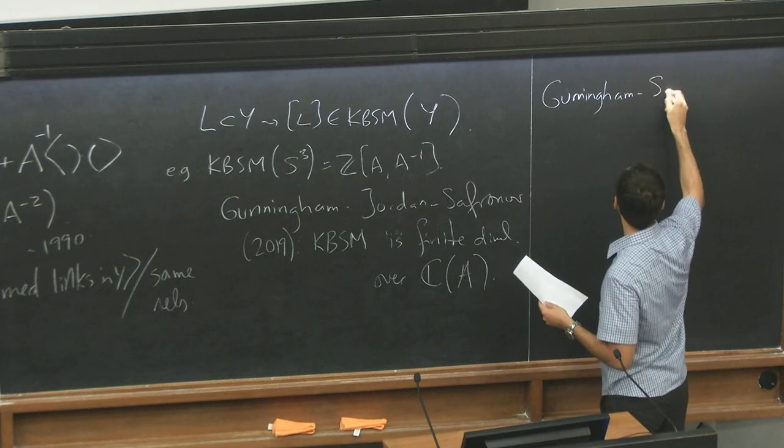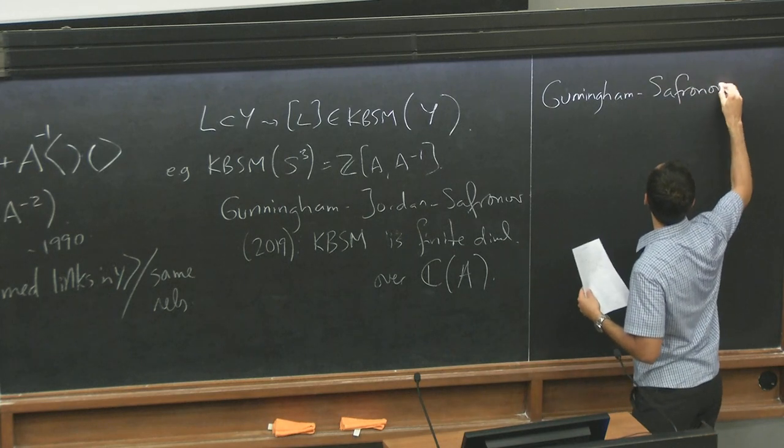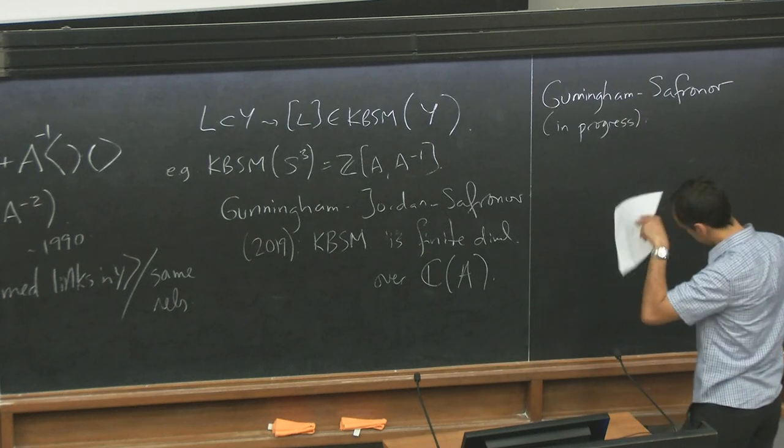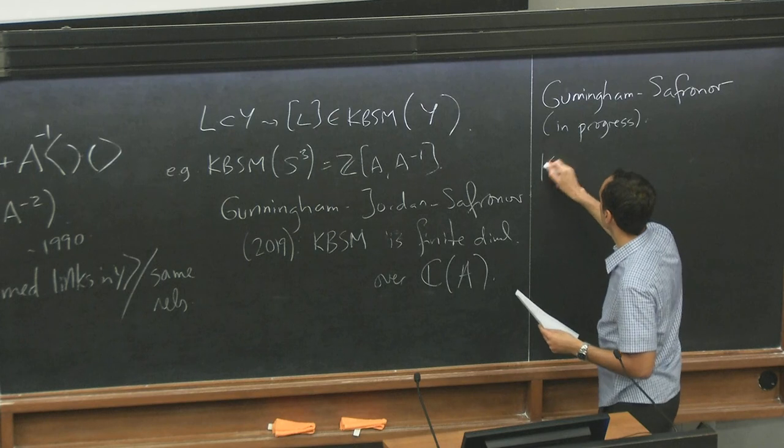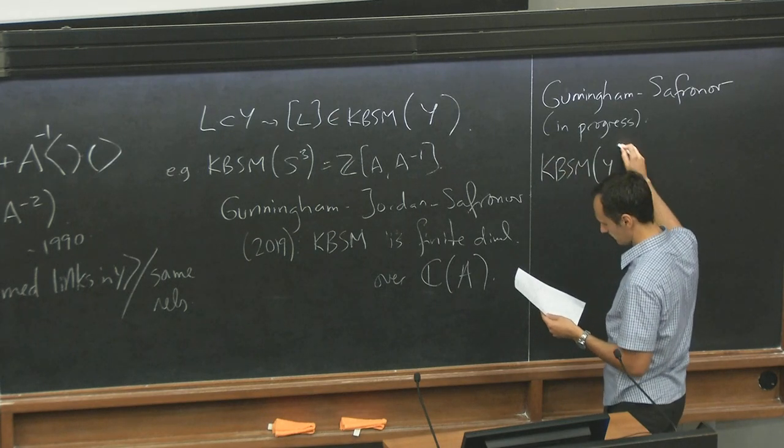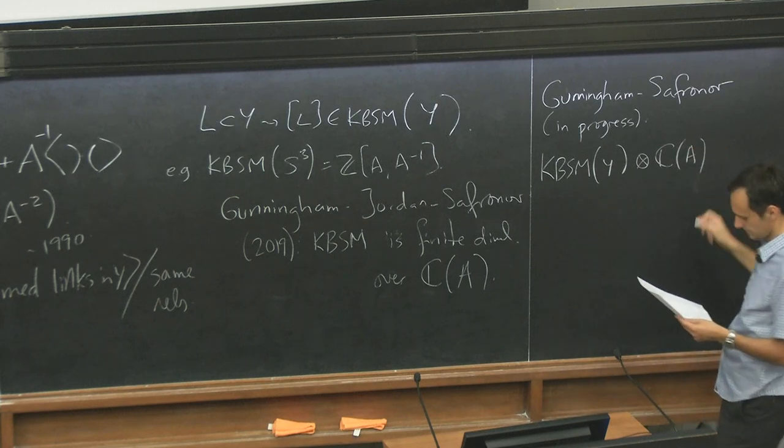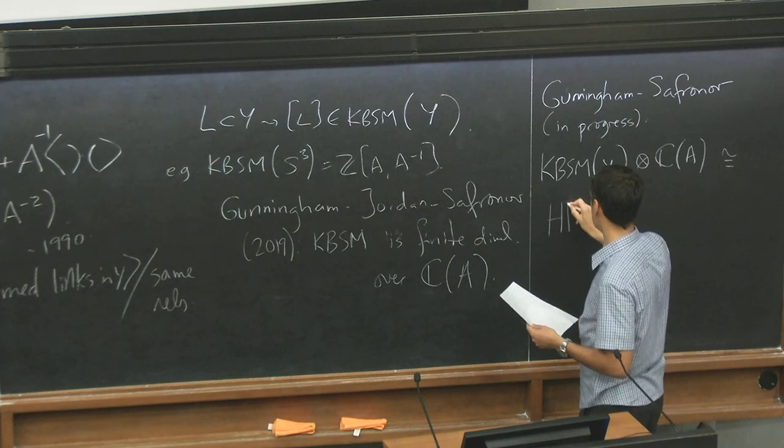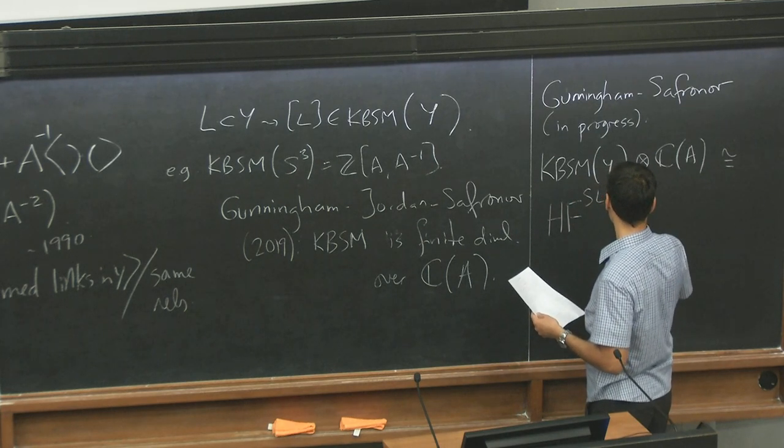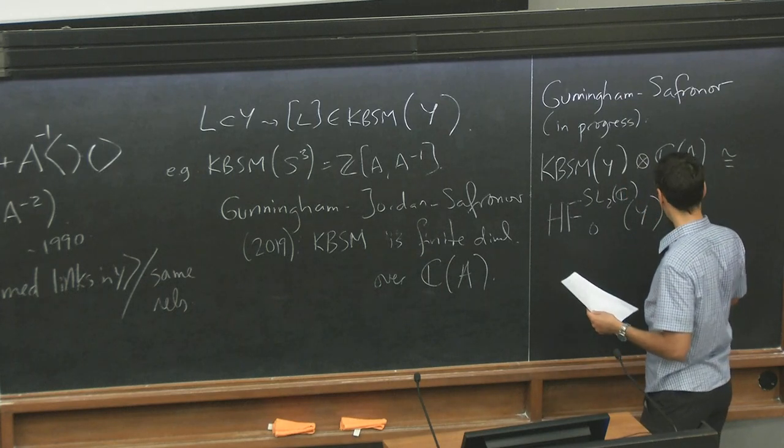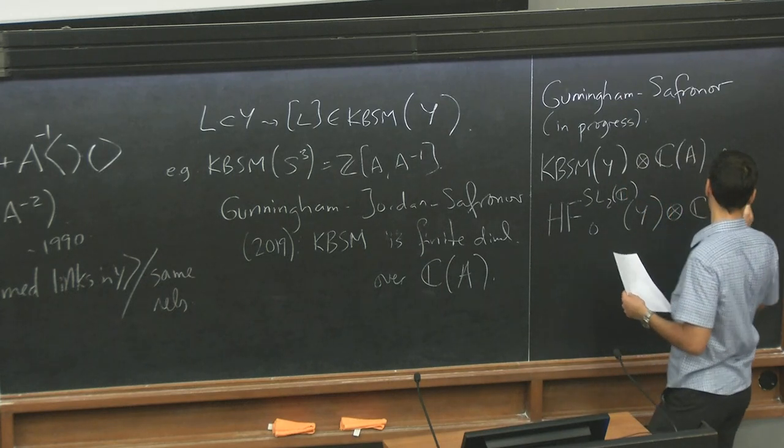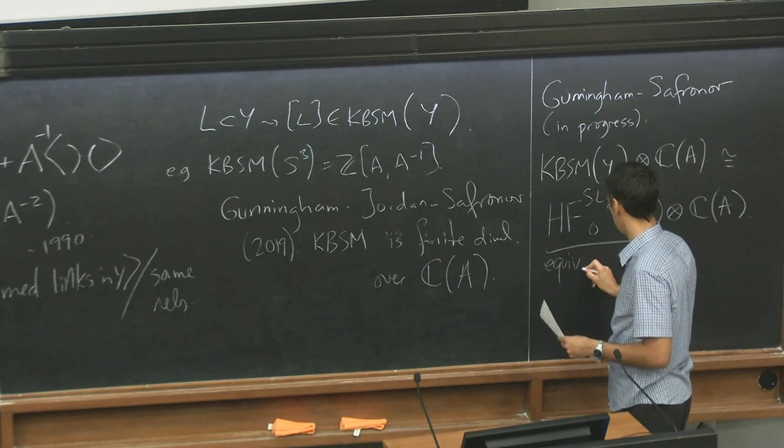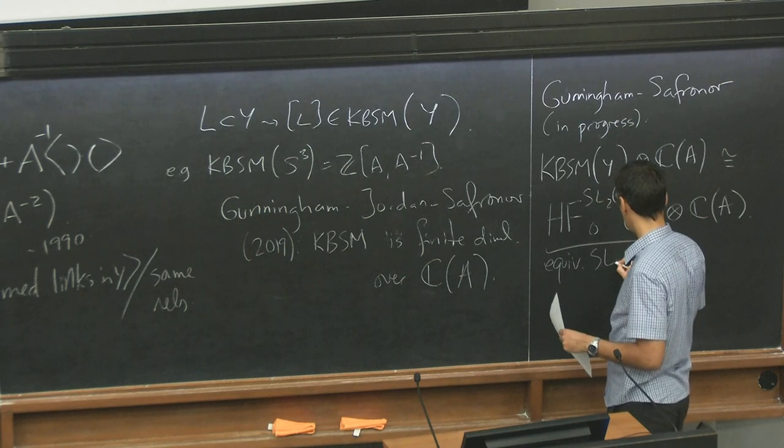In fact, you can say what it is. So there's some work in progress. They announced it at some conferences by Gunningham and Safronov. Proving some conjecture of various people that the skein module, once you tensor with this field of rational fractions,